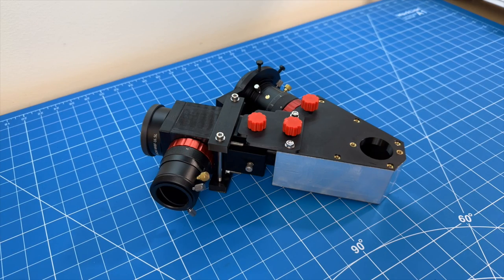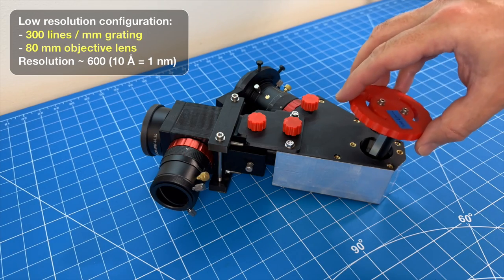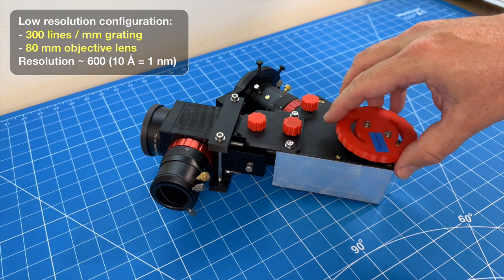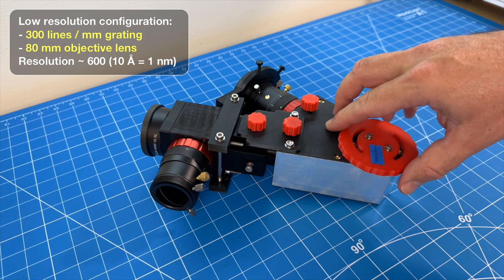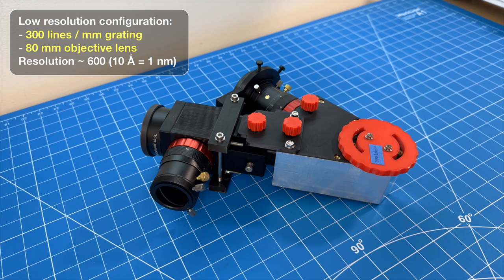To configure my spectrograph to work in low resolution, I can install a diffraction grating with 300 lines per millimeter and an objective lens with an 80 millimeter focal length. In that configuration, it has a spectral resolution similar to Creve's spectrometer, which is roughly 10 angstrom or 1 nanometer.